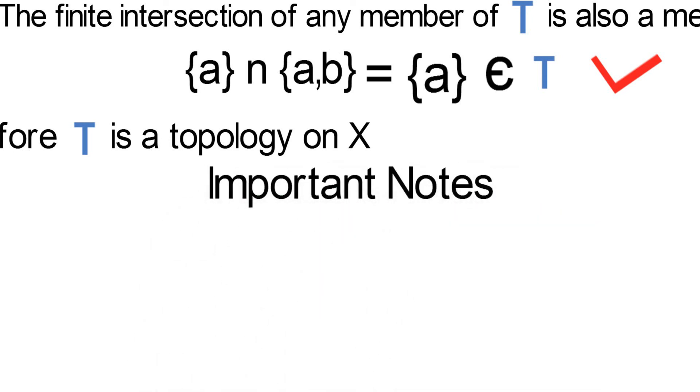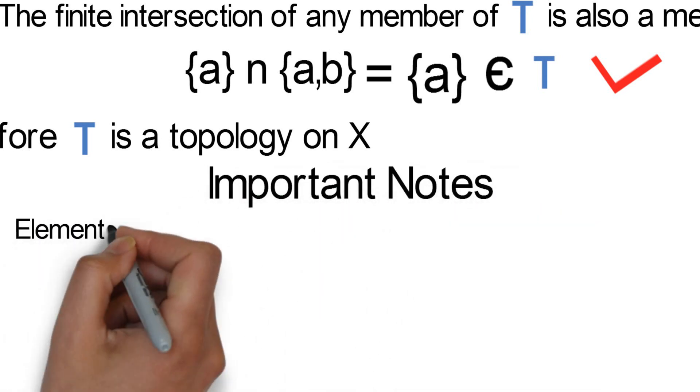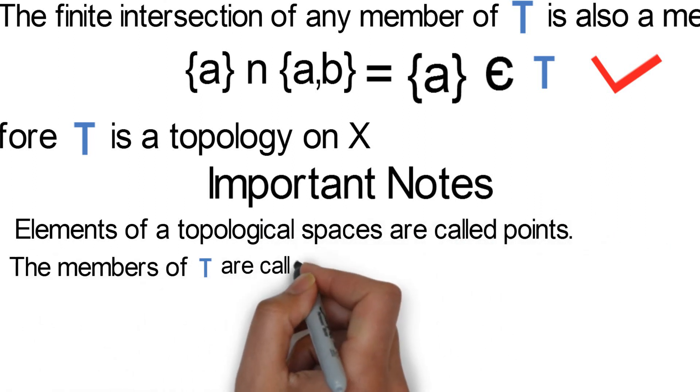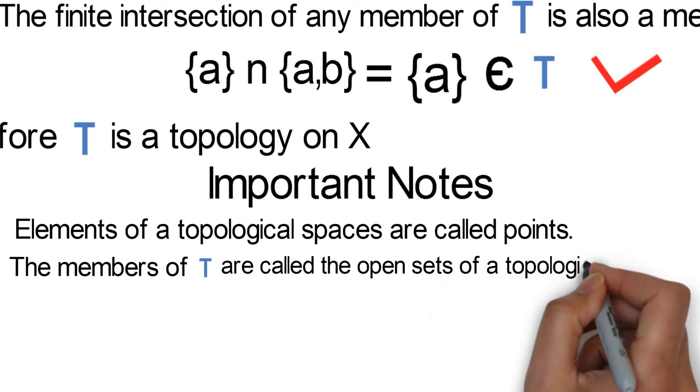Taking some important notes: elements of a topological space are called points and the members of tau are called the open sets of a topological space.